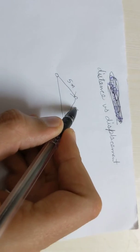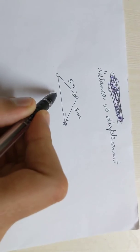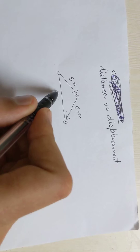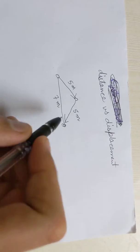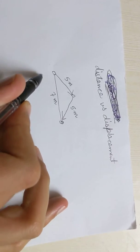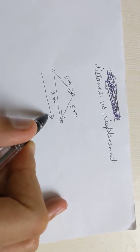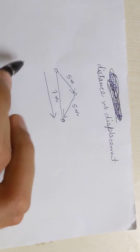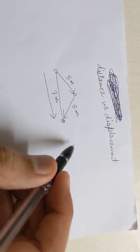And this is also 5 meters, and let's say this angle is such that this is 7 meters. So the total displacement of the object is 7 meters in this direction in the x-axis. Let's say this is x and this is y.